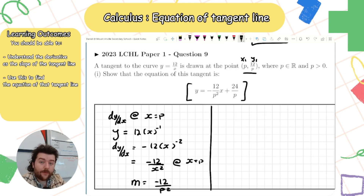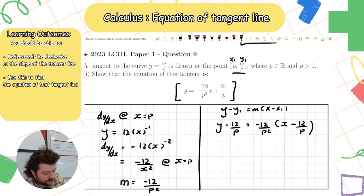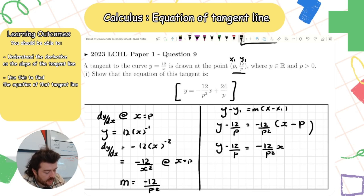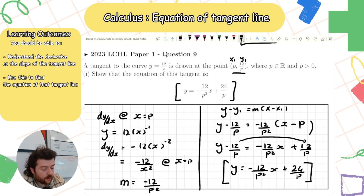Using the equation of a line: y − y₁ = m(x − x₁), so y − 12/p = (−12/p²)(x − p). The term (−12/p²)(−p) simplifies to +12/p. Therefore y = (−12/p²)x + 12/p + 12/p, which equals (−12/p²)x + 24/p. That is what we were asked to find — proven.